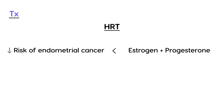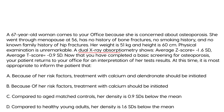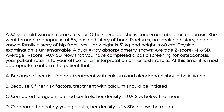Let's look at some clinical vignettes. A 67-year-old woman comes to the office concerned about osteoporosis. She went through menopause at 56, has no history of bone fractures, no smoking history, and no known family history of hip fractures. Her weight is 51 kg and height is 60 cm. Physical exam is unremarkable. DEXA scan shows a Z-score of 1.6 and a T-score of 0.9.